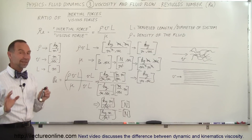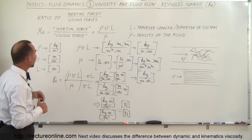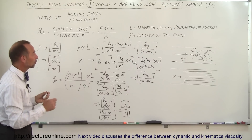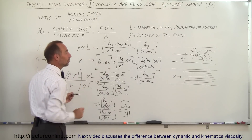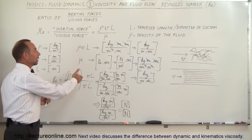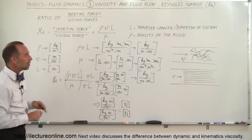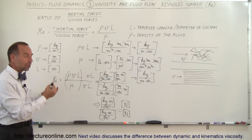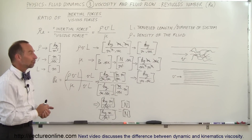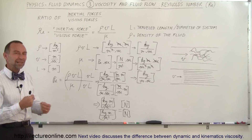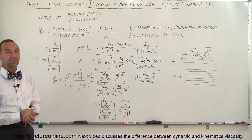To get force units we have to multiply both the numerator and denominator by v times l. I hope you now have a feel for the units of the Reynolds number — it is unitless. Also remember that the units for viscosity are pascals times seconds, and that the units of the numerator and denominator are equal. Reynolds number is a dimensionless quantity used in fluid dynamics, and that's really where it came from.